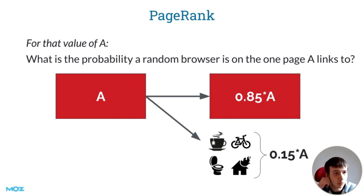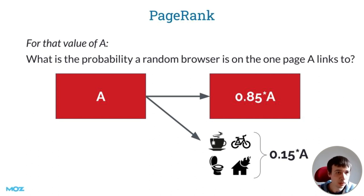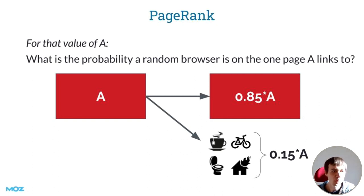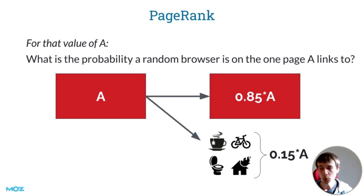The reason we assume there's a chance on every cycle that people exit to do non-browser-based activities is that otherwise we get some kind of infinite cycle. If you assume people never leave their computers and just browse through links endlessly, you eventually assume every page has infinite traffic, which isn't the case. So that's the starting point: a really simple internet with a page that has a link on it and a page without one.